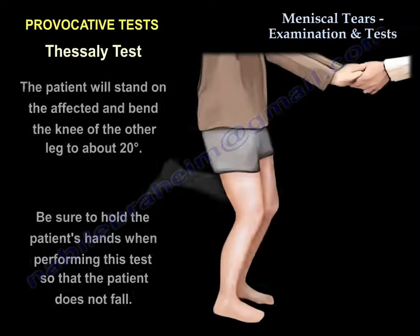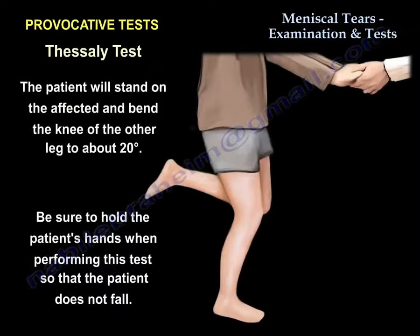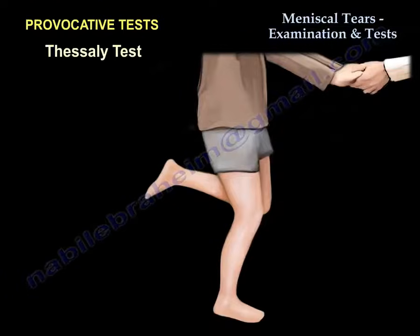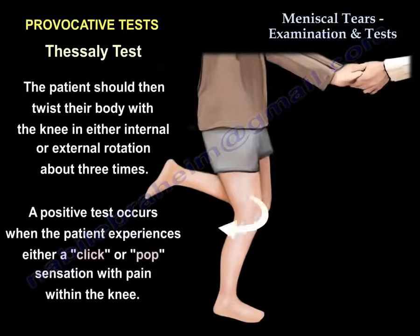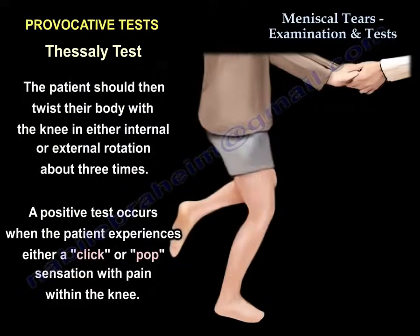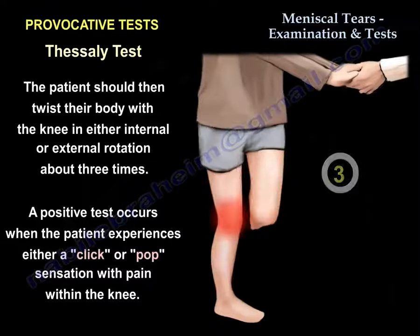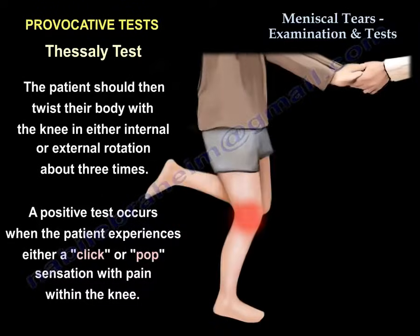Lastly, the patient will stand on the affected limb and bend the knee about 20 degrees. Make sure you hold the hands of the patient so the patient doesn't fall. The patient twists with the knee in internal or external rotation about three times, and a positive test is when the patient experiences a click or a pop with pain in the knee.